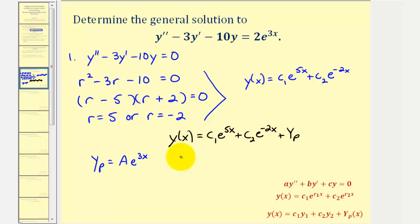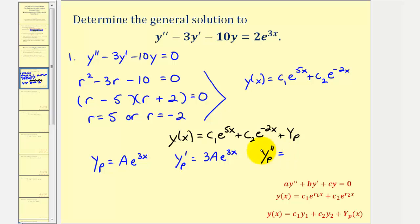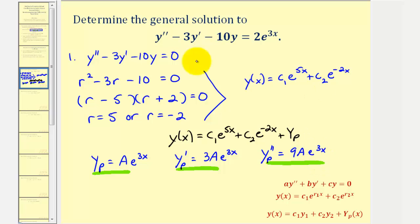So Yp' would be A times the derivative of e^(3x), which would be 3Ae^(3x). And therefore Yp'' would be equal to 9Ae^(3x). Now we'll take these three functions and perform substitution into the original differential equation.